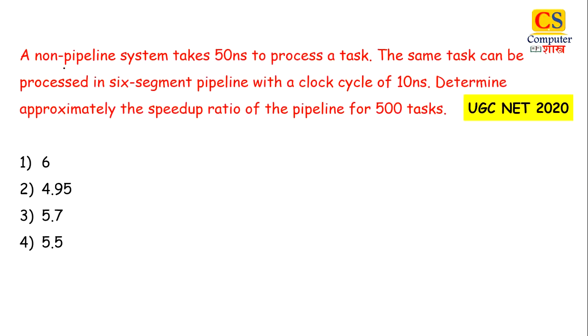First question is: a non-pipeline system takes 50 nanoseconds to process a task. The same task can be processed in a 6-segment pipeline with a clock cycle of 10 nanoseconds. Determine approximately the speedup ratio of the pipeline for 500 tasks.